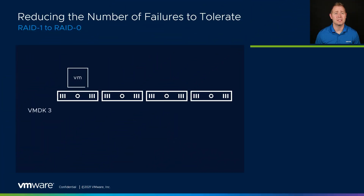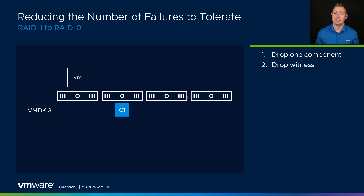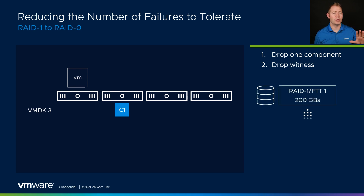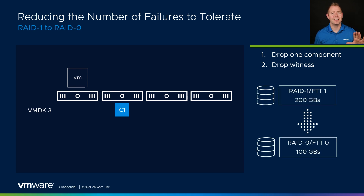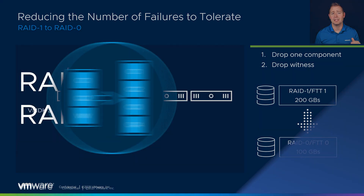This policy change is really simple, because all vSAN has to do is drop one of our data components and then drop one of our witnesses. Then we have a RAID0 object, and vSAN makes that determination for us. So if we had a 100-gig VMDK, we'd go from 200 gigs with our RAID1 FTT of one object down to 100 gigs with our RAID0 object.